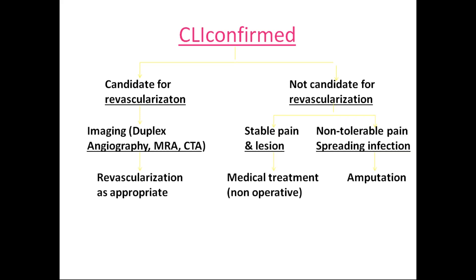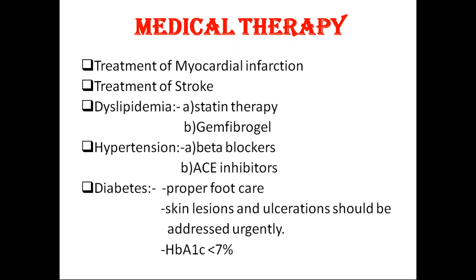If the patient is not suitable for revascularization, pain and lesions are controlled medically first. If the patient does not respond and there is intolerable pain with spreading infection, amputation is considered based on the extent of gangrene or necrotic changes — below or above the knee, below or above the ankle, or confined to the toes or metatarsals. Medical therapy includes treatment of myocardial infarction, stroke, dyslipidemia with statins or fibrates, hypertension with beta-blockers and ACE inhibitors, and diabetes management with HbA1c kept below 7%.